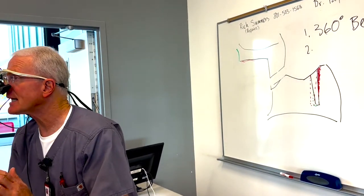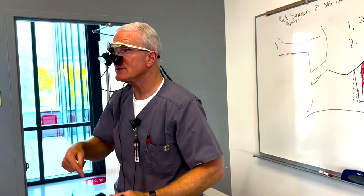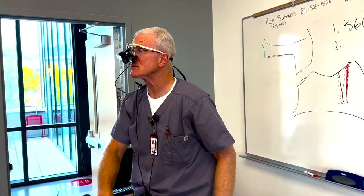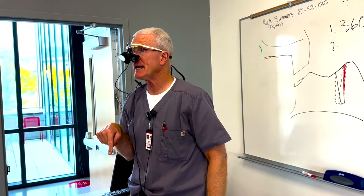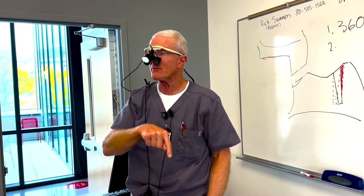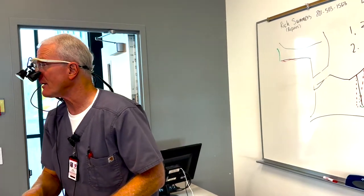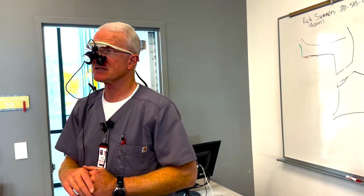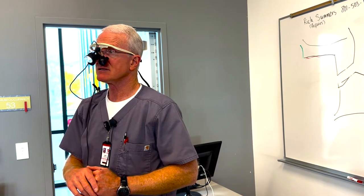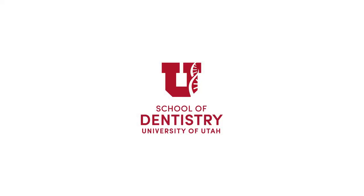You cannot have an undercut anywhere. Obviously, there's no path of insertion. So, when you look down on your preparations, you have to be able to see all of your margins at the same time with one eye closed. If you can't see the entirety of the margin around both teeth, you have an undercut someplace. If you make your temporary and you're frustrated because it keeps tearing on you, there's probably an undercut someplace.